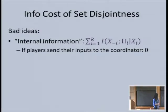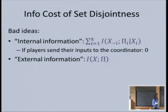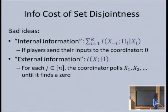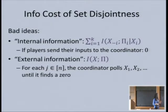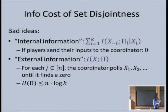In this naive protocol, the coordinator learns everything. So maybe we should look at what the coordinator—as an external observer—learns about the joint input from the entire transcript. It turns out this can also be too small. Think of the protocol where the coordinator, for each coordinate, looks for a zero—going over players and asking for their input until finding a zero, then stopping and moving to the next coordinate. The entropy of the transcript can be compressed to just the index of the player where the coordinator found the zero, so the entropy is only n times log k.